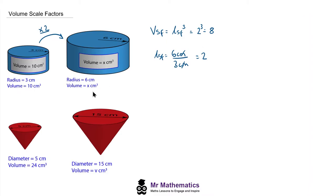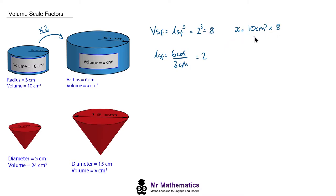We can now work out the value x by multiplying the smaller volume, 10 centimeters cubed, by the volume scale factor of 8. So x equals 80 centimeters cubed.